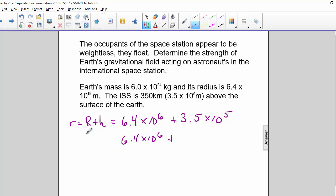We need to change 3.5 times 10 to the 5th so that it has the same exponent. We'll make that 0.35 times 10 to the 6th. So this becomes 6.75 times 10 to the 6th meters.